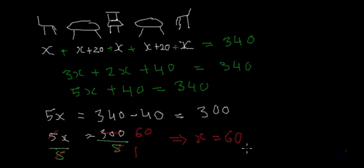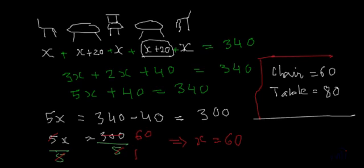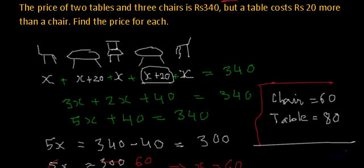So what is x? x is the cost of the chair. So chair cost rupees 60. And table, cost of one table is x plus 20. So the cost of each table will be 60 plus 20, that is 80. So this is our solution for this problem. The cost of the chair is rupees 60 and cost of the table is rupees 80.